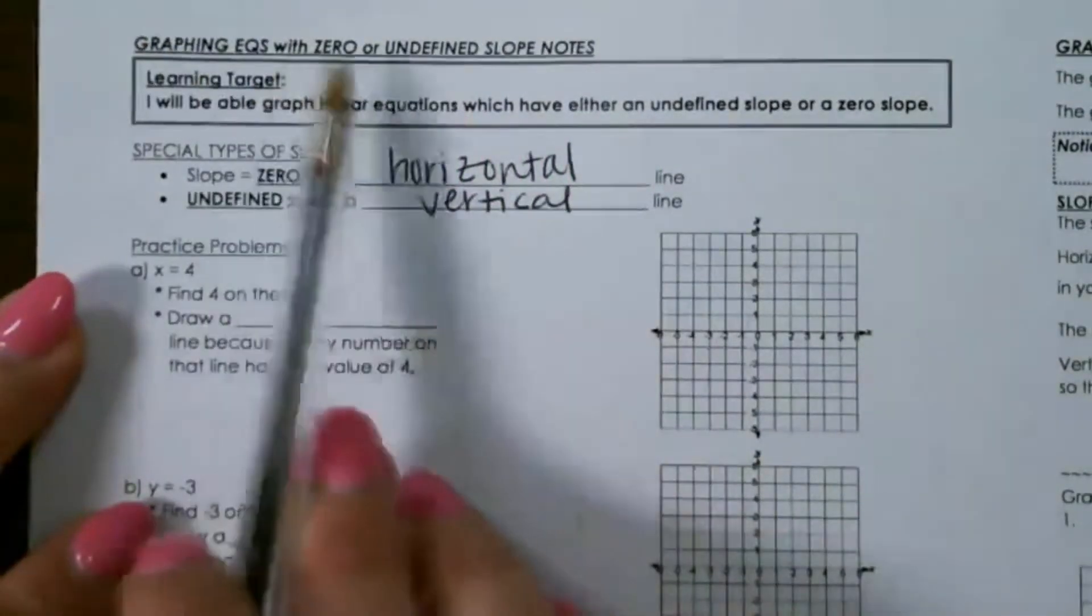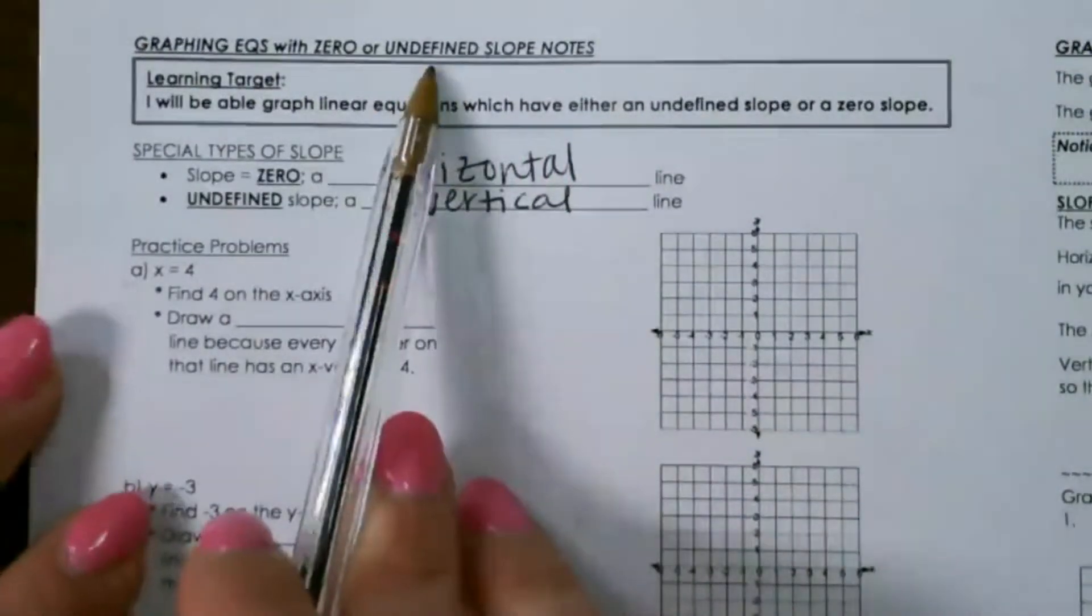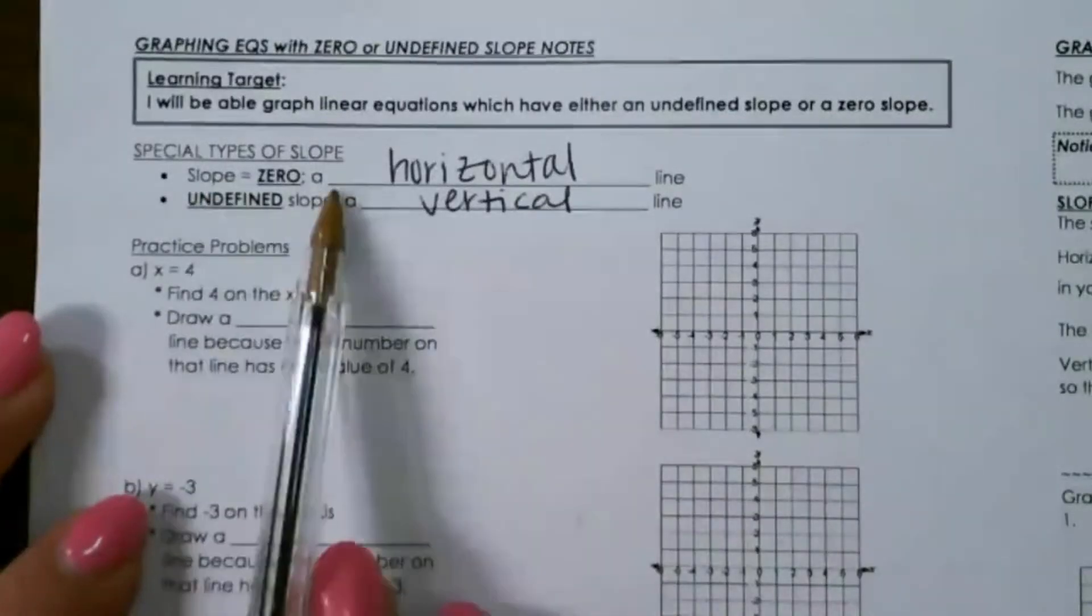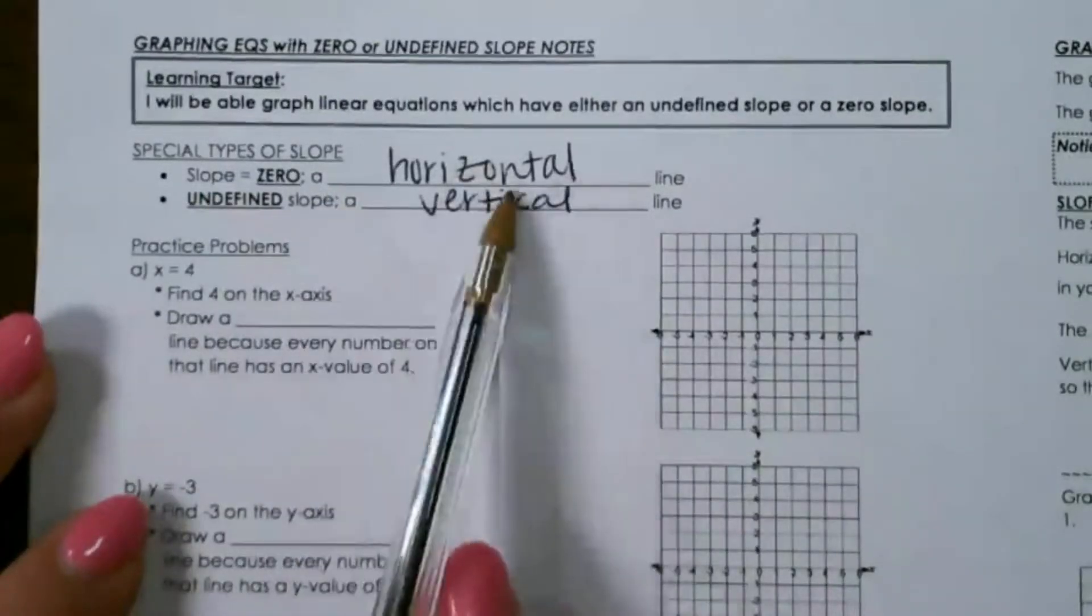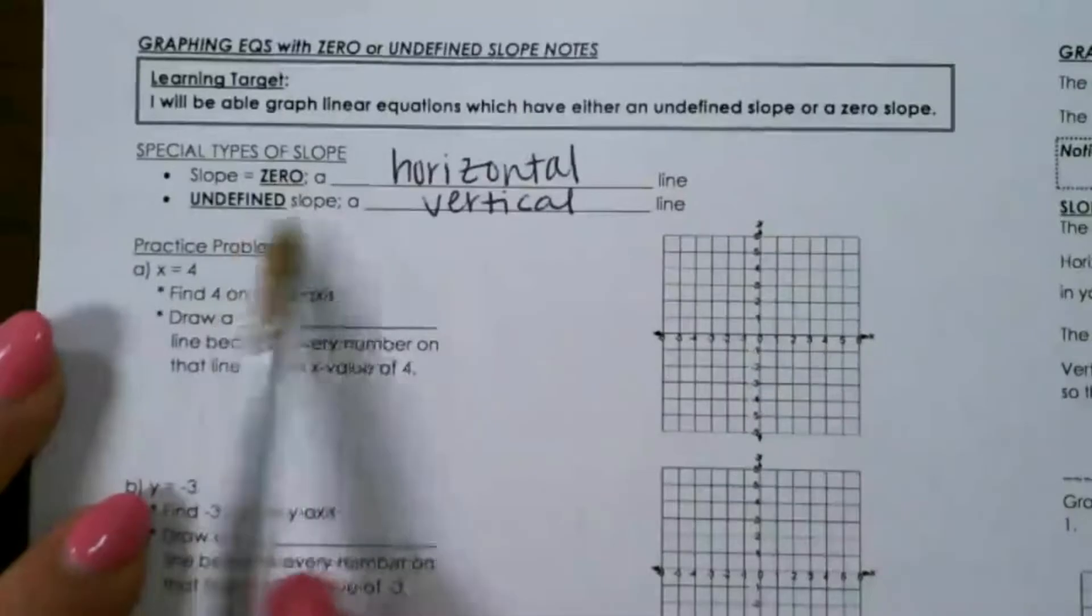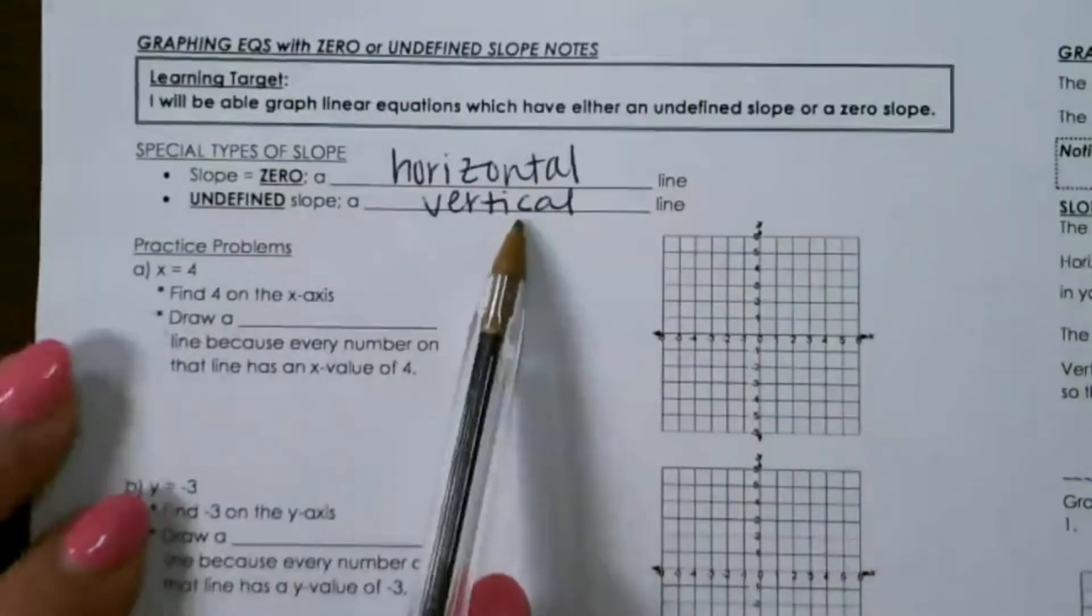Let's take a look at graphing equations with zero or undefined slopes. So remember, if a slope is zero, that's going to be a horizontal line. If it has an undefined slope, it's going to be a vertical line.